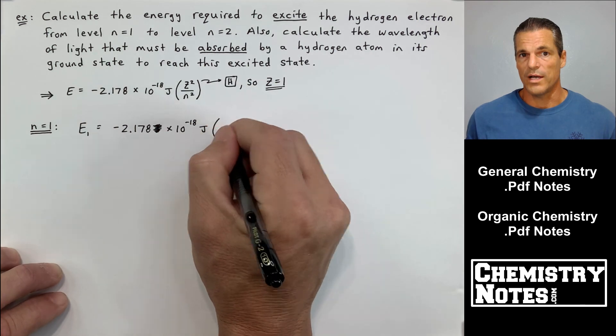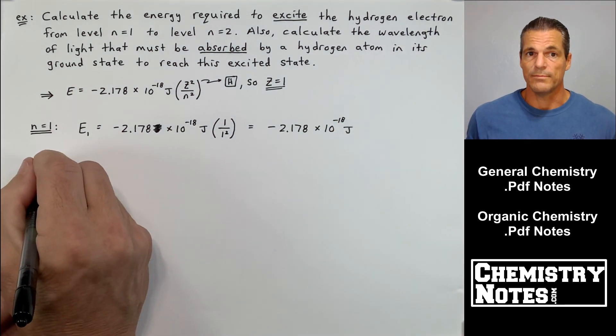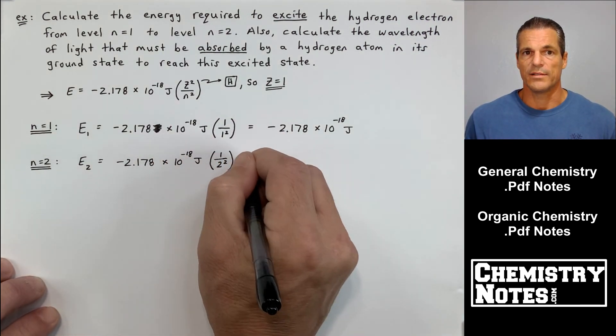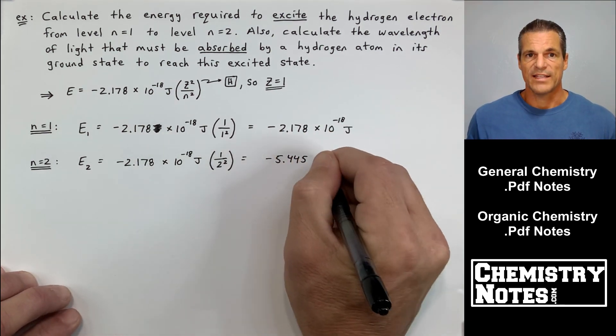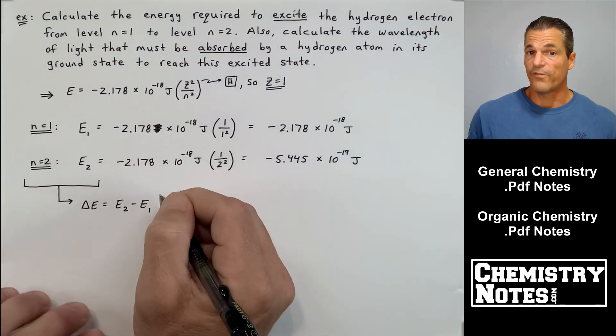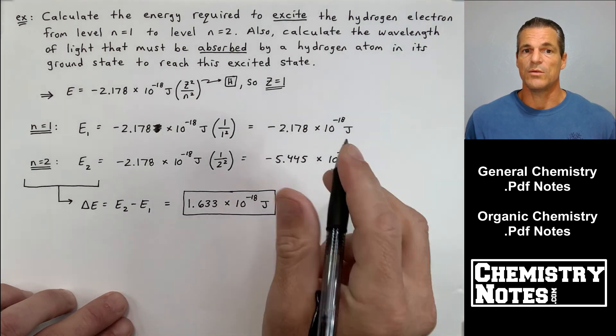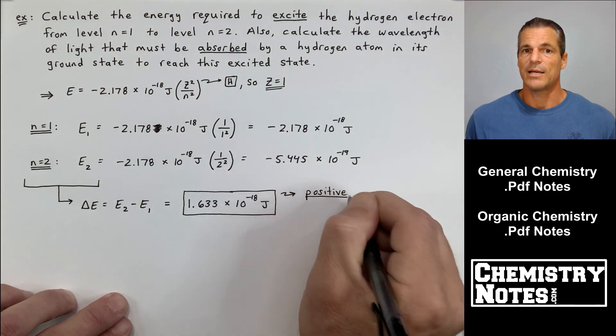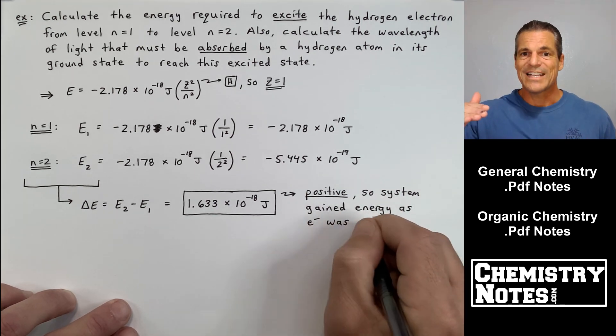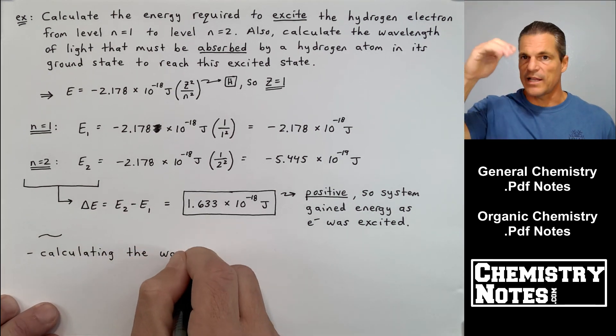E equals minus 2.178 times 10 to the minus 18th joules times Z squared over N squared. For hydrogen, Z is 1. We're going to go from N equals 1 to N equals 2. So our first equation is for N equals 1, which equals minus 2.178 times 10 to the minus 18th joules. For N equals 2, we make N squared down there of 2 squared. I get negative 5.445 times 10 to the minus 19th joules. Subtract E2 minus E1, you get 1.633 times 10 to the minus 18th joules. Delta E is positive, which makes sense because we have to absorb energy to excite the electron.